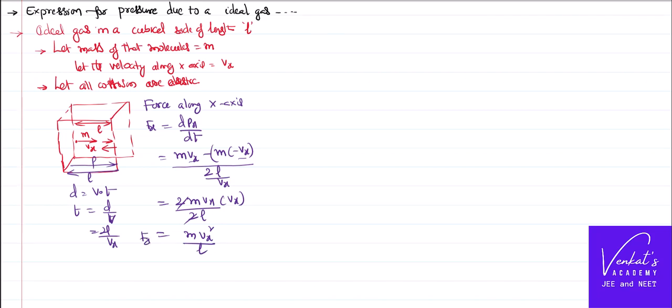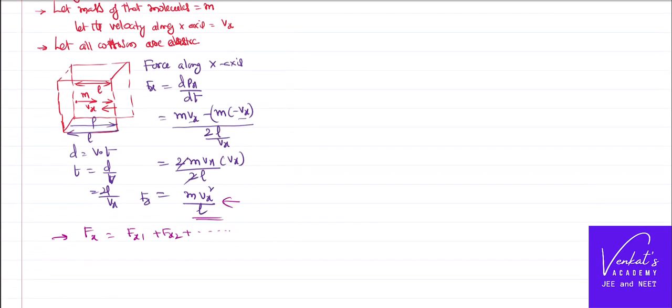That is the force on one gas molecule along the x-axis. But there are many gas molecules, each exerting a different force. To get the total force along x, we add all of them. Each molecule has the same mass M but different velocities: Vx1, Vx2, and so on. The total force along x sums all their contributions: Fx_total = (M/L)(Vx1² + Vx2² + ...).